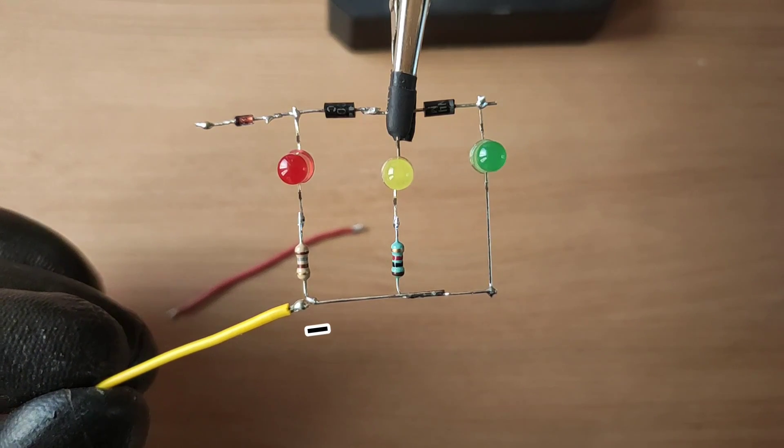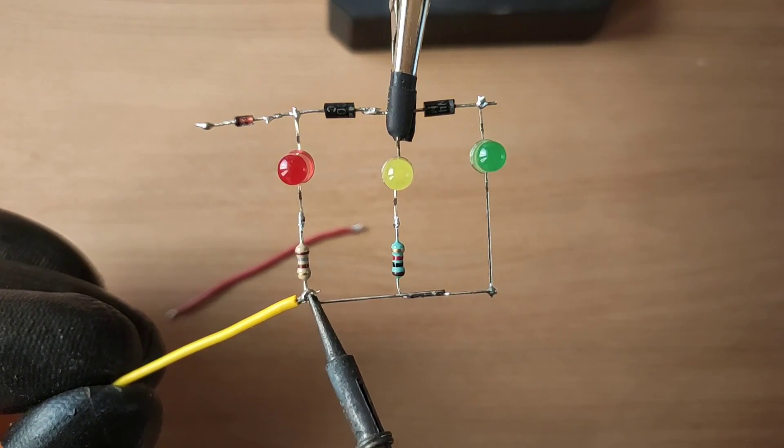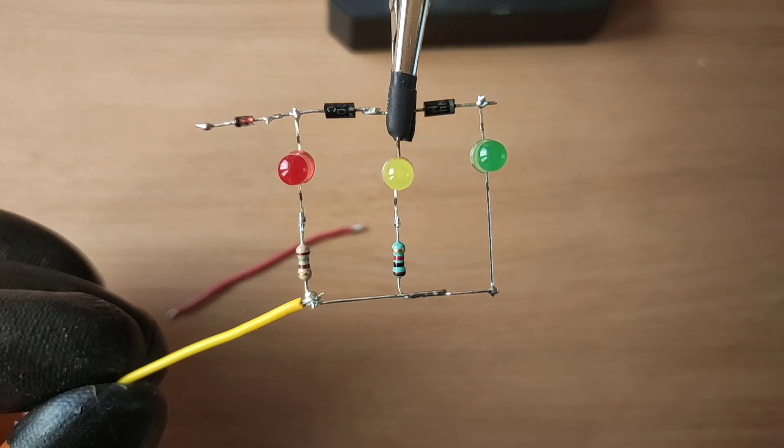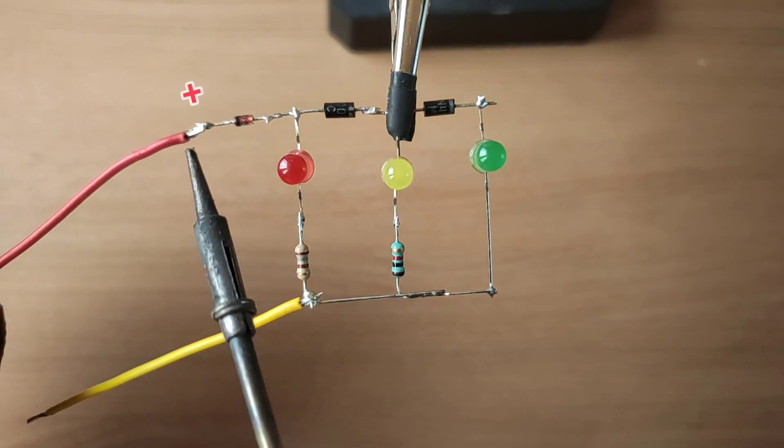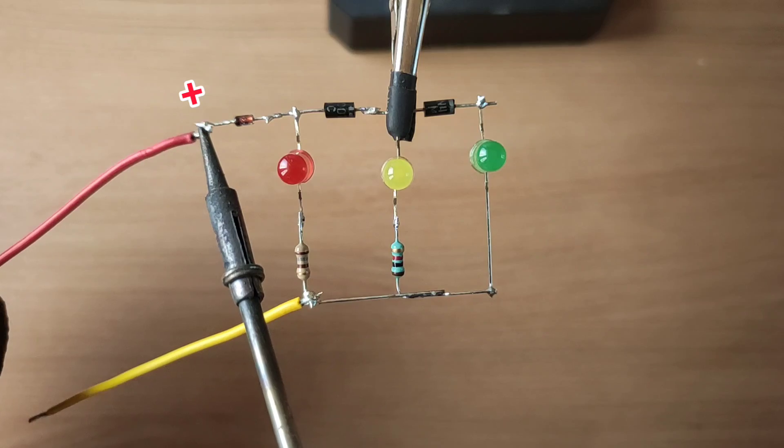Solder negative wire with ends of resistors. Solder positive wire with Zener diode's cathode side.